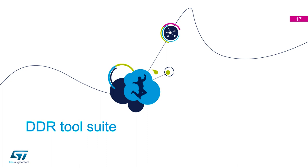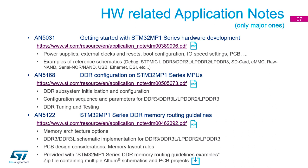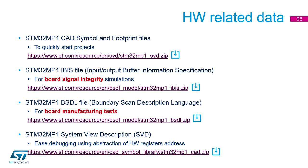On the website we have lots of application notes, growing day by day. Key ones include the memory routing guidelines AN5122, DDR configuration AN5168, and the generic getting-started guide AN5031 which covers reference schematics, power supplies, clocks, resets, and more. Alongside the documentation, we have all test-related software, models, and files — CAD symbols for your layouts, IBIS simulations for board signal integrity, BSDL files for boundary scan testing, and system view description files for CAD. All of these are available to download from the website.